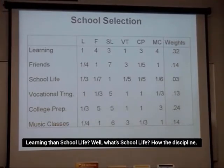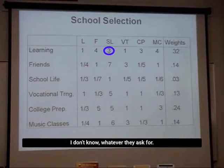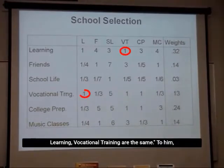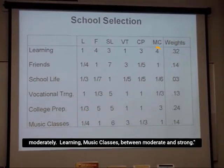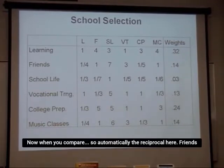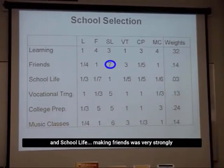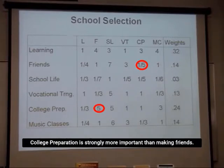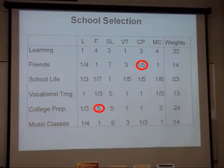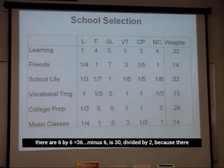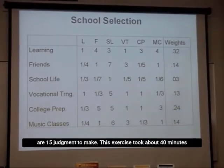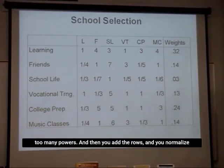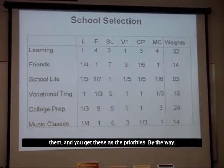How much more important is learning than school life? He said he's brave — he can learn despite the strictness of school life, but moderately. Learning and vocational training were equal to him. Learning is moderately more important than college preparation. Learning versus music classes: between moderate and strong. Friends was very strongly more important than school life, but college preparation was strongly more important than making friends. In a six-by-six matrix, there are 15 judgments to make. This exercise took about 40 minutes. Then we raise the matrix to sufficient powers, add the rows, normalize them, and get the priorities.